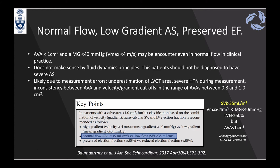The third scenario is the most unusual: normal flow with low gradients, AVA less than 1 cm², and normal ejection fraction. With normal EF and normal flow, having a severe AVA that doesn't match the gradients most likely indicates a measurement error — specifically an underestimation of the LVOT area. The same situation of severe hypertension during the study can also create this inconsistency. When you have low gradient AS with preserved EF, assess your stroke volume; if it's normal, you are most likely making a measurement error in the LVOT area.